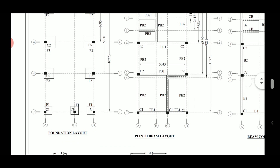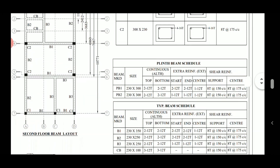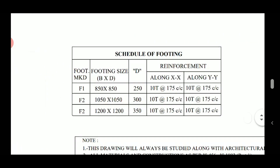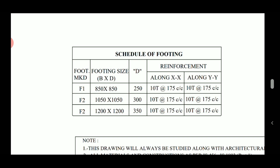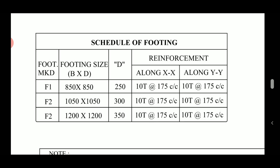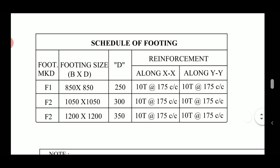Moving on to the foundation schedule — there are three types of foundation marks: F1, F2, and F3. The footing size of F1 is 815 by 850, meaning the two plan dimensions are 815 mm by 850 mm, and the depth of the footing is 250 mm. The reinforcement in the footing is 10T at 175 mm center-to-center along XX and 10T at 175 mm center-to-center along YY, so 10 mm bars at a spacing of 175 mm c/c in both directions.